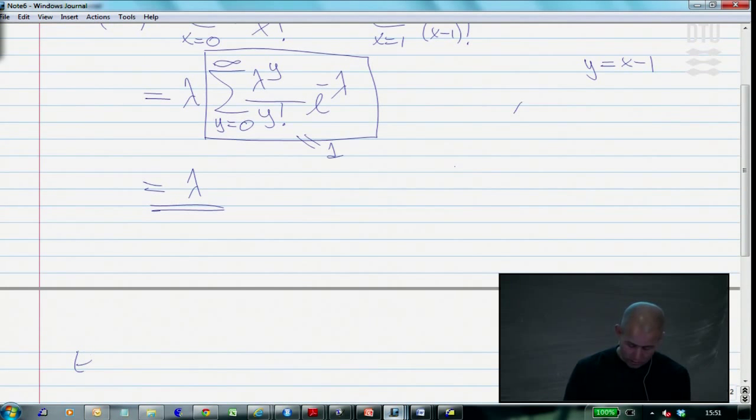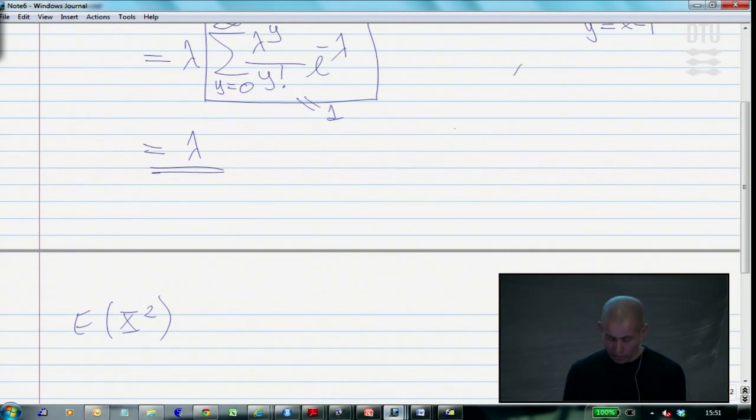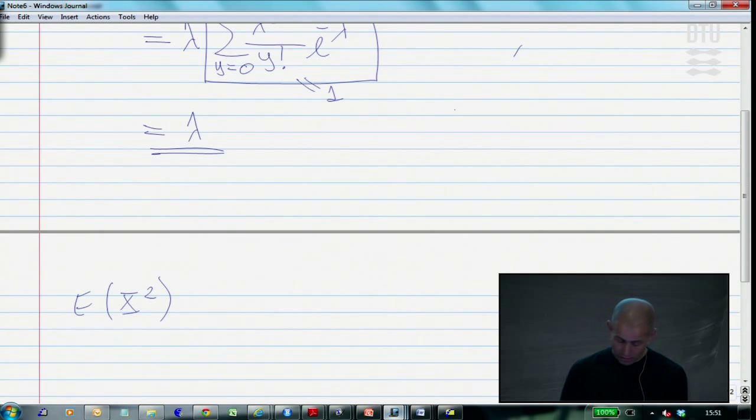To find the variance, I start out by finding the mean of the square of an x, to use the classical variance formula. What is the mean of the square of x in a Poisson? I, again, I sum from 0 to infinity, x squared times the Poisson density, lambda to x, e to minus lambda, over x factorial.